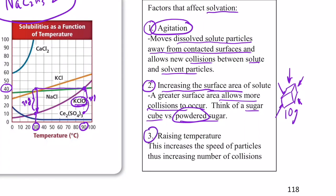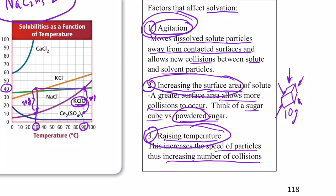And then number three, as we saw in the graph just a minute ago, raising the temperature. Now, raising the temperature increases the speed of the particles, thus increasing the number of collisions and increasing the rate at which solvation can occur. So, three factors that affect solvation: agitation, increasing the surface area, and heating your solvent up.